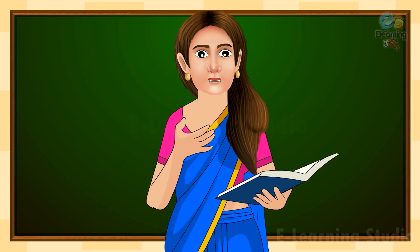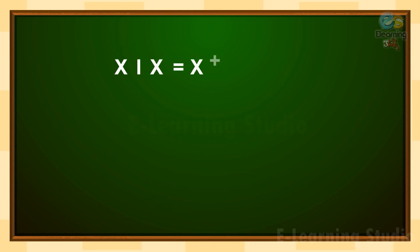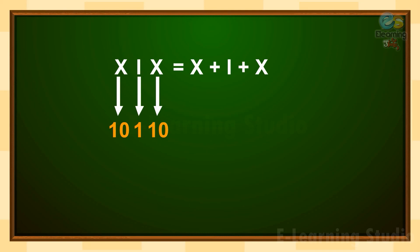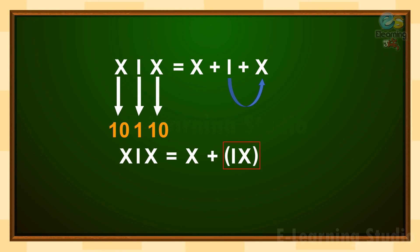In this example, you can see the letters X, I, and X. Letter X stands for ten, letter I for one, and the second letter X again for ten. Letter I, which stands for one, is smaller, so we group it with the symbol on the right, which is letter X. It becomes IX, which stands for nine. So ten plus nine is equal to nineteen.